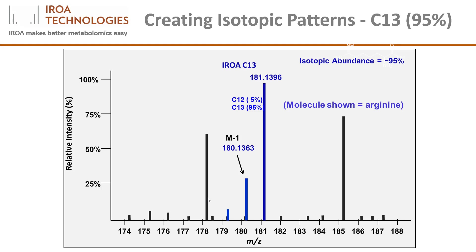The C13 monoisotopic is now the heaviest at 181.1396. And rather than having an M plus 1, it shows an M minus 1 because the C13 monoisotopic peak can only be diluted by a C12, which has one less neutron. As a perfect mirror image, the height of the M minus 1 is also an absolute diagnostic for the number of carbons in the molecule. Therefore, the formula for the underlying molecule is again always a unique solution, and these peaks are easily distinguished from noise and artifacts.